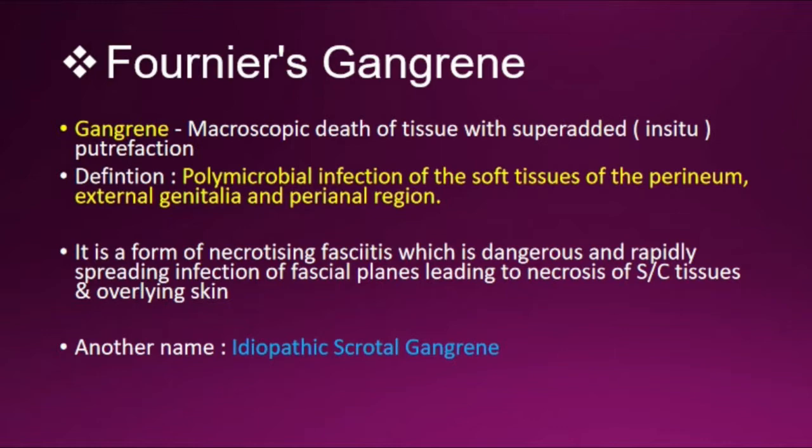Gangrene means macroscopic death of tissue with superadded putrefaction. The definition of Fournier's gangrene is a polymicrobial infection of the soft tissues of the perineum, external genitalia, and perianal region.